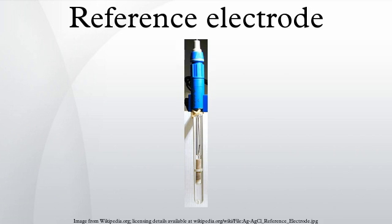A reference electrode is an electrode which has a stable and well-known electrode potential. The high stability of the electrode potential is usually reached by employing a redox system with constant concentrations of each participant of the redox reaction. There are many ways reference electrodes are used. The simplest is when the reference electrode is used as a half-cell to build an electrochemical cell. This allows the potential of the other half-cell to be determined. An accurate and practical method to measure an electrode's potential in isolation has yet to be developed.